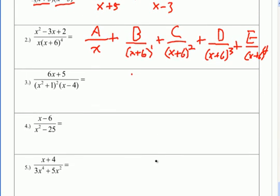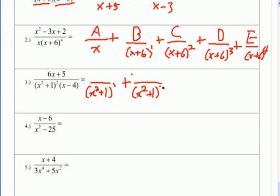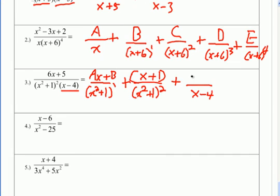On number 3, the denominator is already factored. We have a repeated quadratic factor: x squared plus 1 is quadratic and repeated twice, requiring two separate fractions. So x squared plus 1 to the first power and x squared plus 1 to the second power. Because these are quadratic, I make the numerators linear: ax plus b, and cx plus d. There's also one more factor that's linear and single, so it gets its own fraction with a constant. Since a, b, c, d are used, this one gets e.